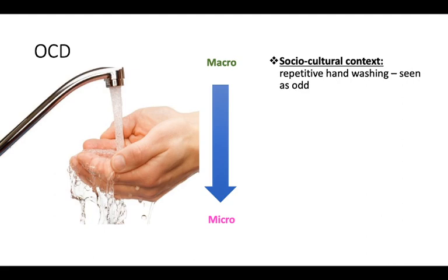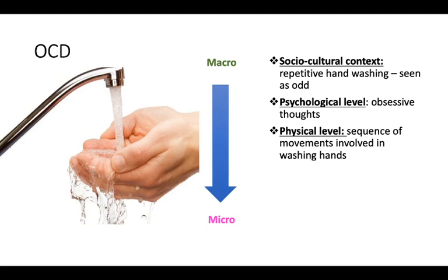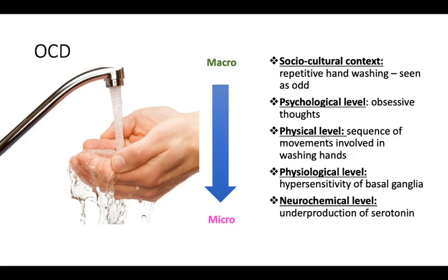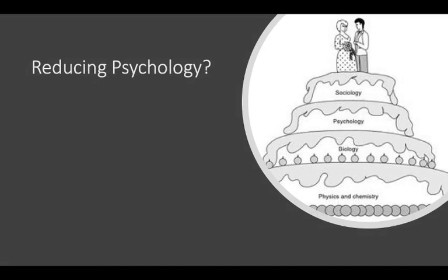Perhaps the reason OCD is seen as problematic is because society views it as odd — that's the social and cultural context. Going down a level: the psychological level involves obsessive thoughts. Getting more narrow, the physical level is a sequence of movements involved in the washing of hands. Getting even smaller, the physiological level is a hypersensitivity of the basal ganglia — a part of the brain involved in OCD. And all the way down to the neurochemical level: an underproduction of serotonin. So is the problem societal, the thoughts, the movement, the part of the brain, or the specific neurochemical activity happening between neurons?